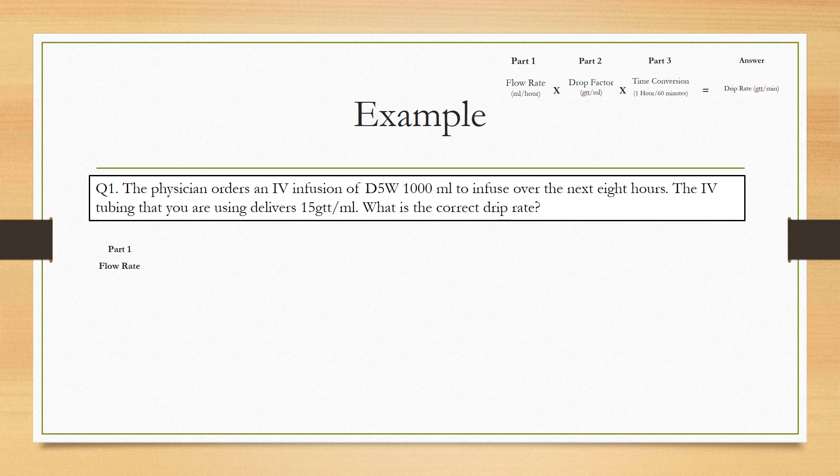So here's our first example. The physician orders an IV infusion of D5W 1000 milliliters to infuse over the next eight hours. The IV tubing that you are using delivers 15 drips per milliliter. What is the correct drip rate?